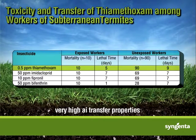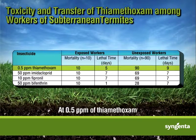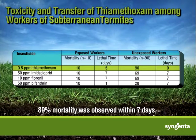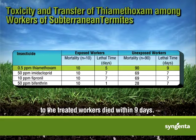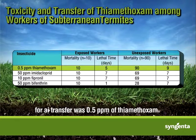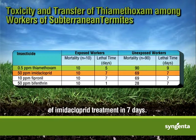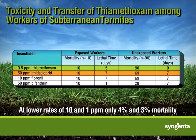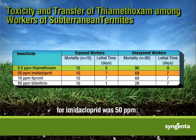Thiamethoxam treatments had very high active ingredient transfer properties between workers. All the termites died within 3 days in the 50 parts per million thiamethoxam treatment. At 0.5 parts per million of thiamethoxam, 89% mortality was observed within 7 days. The exposed workers all died within 5 days, and the healthy workers exposed to treated workers died within 9 days. The estimated minimum effective dose for AI transfer was 0.5 parts per million of thiamethoxam. By comparison, only 77% mortality was observed with 50 parts per million of imidacloprid treatment in 7 days, and at lower rates of 10 and 1 parts per million, only 4% and 3% mortality was observed respectively. The minimum effective rate for AI transfer for imidacloprid was 50 parts per million.